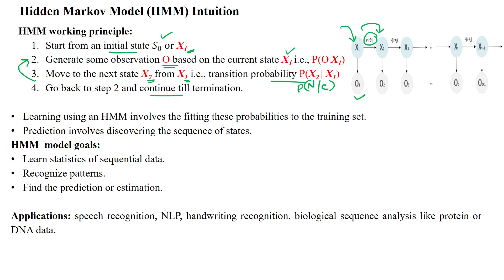We then go back to step 2 and continue the same process. Once x2 is reached, it generates the observation. The third step is to move to the next state by using some transition probability, denoted as the probability of x3 given x2. Once x3 is reached, it generates o3, and this process keeps going for the given time period.